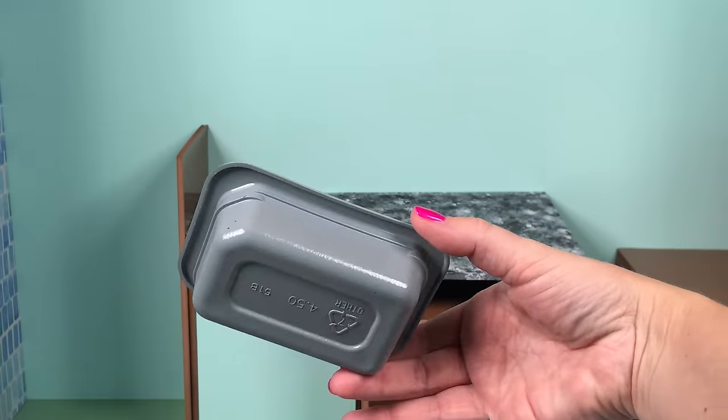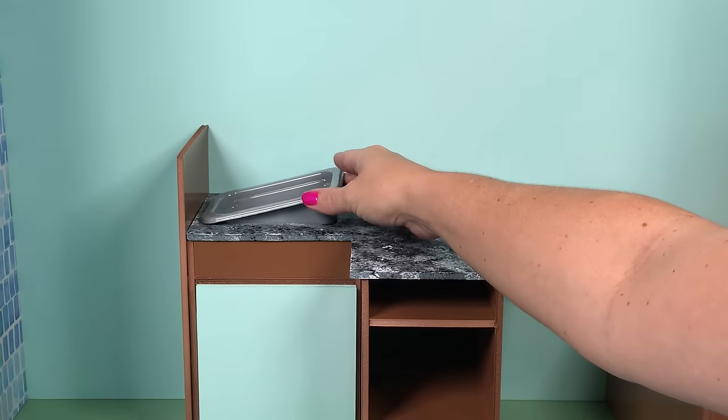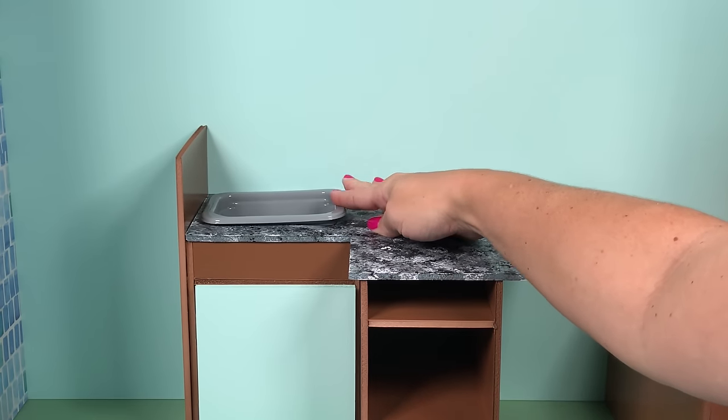For the kitchen sink, I used a toddler meal container and painted it gray. You can glue it right into the open space.